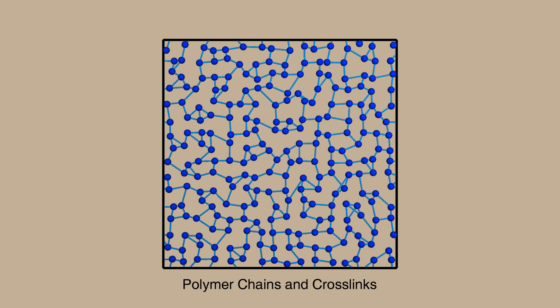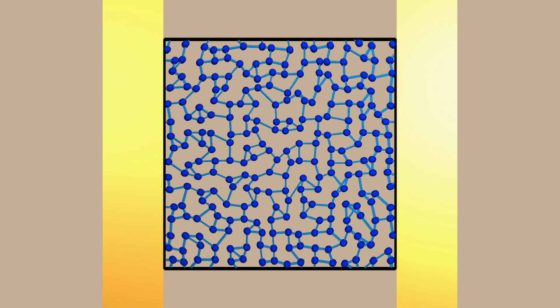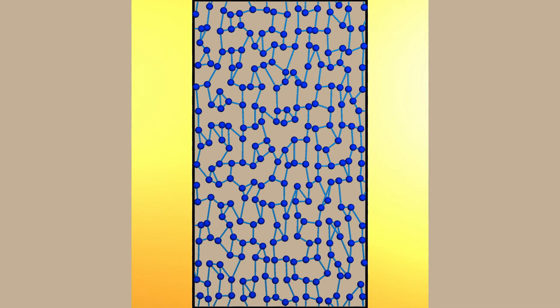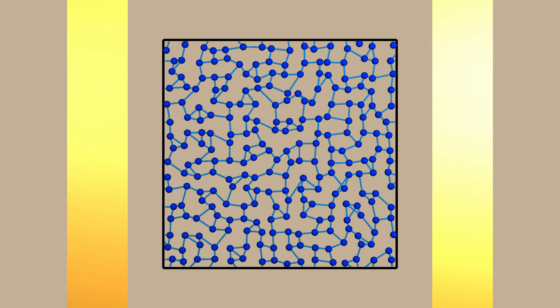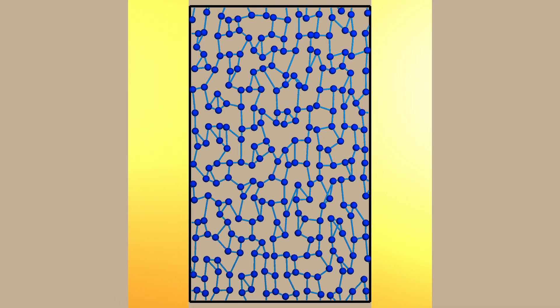The crosslinks tie those polymer chains together into one enormous structure and give the rubber its permanent shape. With that combination of mobile chains and interconnecting crosslinks, the rubber's molecular network deforms when you push or pull on it, but quickly springs back to its permanent shape when you let go.